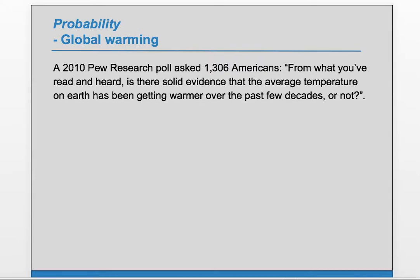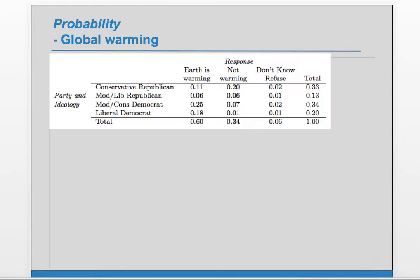A 2010 Pew Research poll asked 1,306 Americans: 'From what you've read and heard, is there solid evidence that the average temperature on Earth has been getting warmer over the past few decades or not?' The results are summarized in this two-way table, recorded as decimals or relative frequencies. We can see that 33% of the respondents were conservative Republicans, 60% overall believed the Earth is warming, and 11% fell into both of these categories.